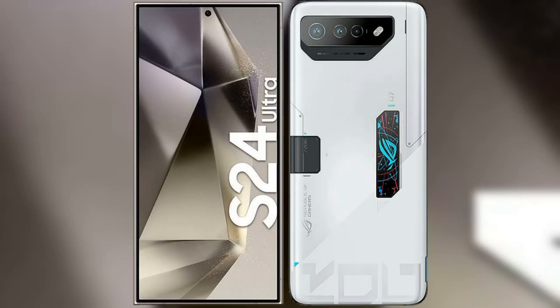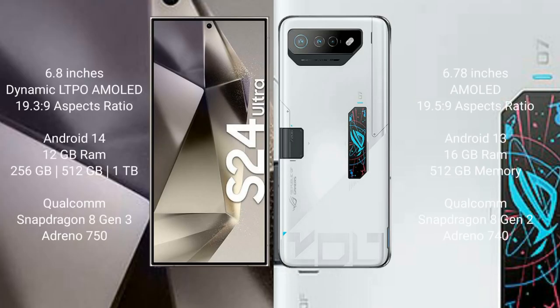I will compare the new Samsung Galaxy S24 Ultra with the ASUS ROG Phone 7 Ultimate. The Samsung Galaxy S24 Ultra comes with a 6.8 inches dynamic LTPO AMOLED display and aspect ratio 19.3:9. The ASUS ROG Phone 7 Ultimate has a 6.78 inches AMOLED display and aspect ratio 19.5:9.